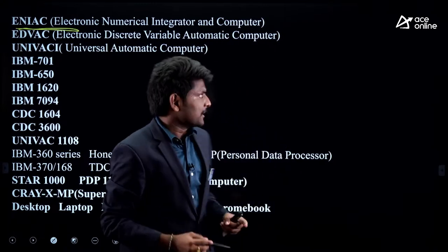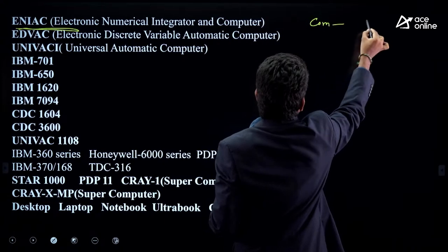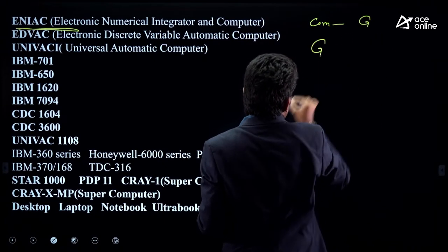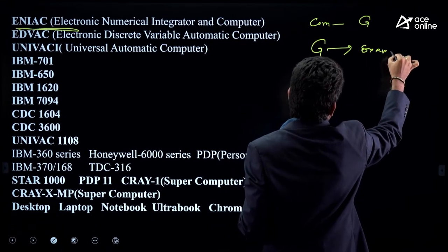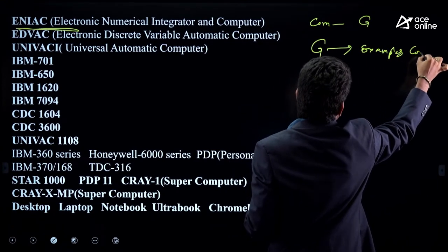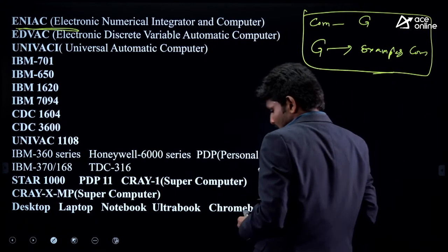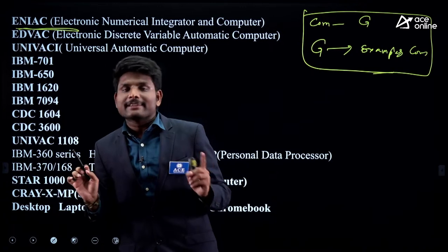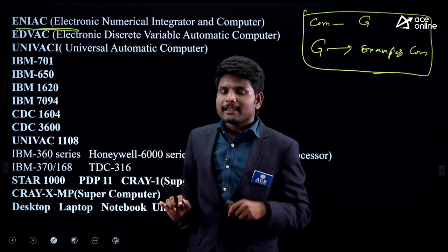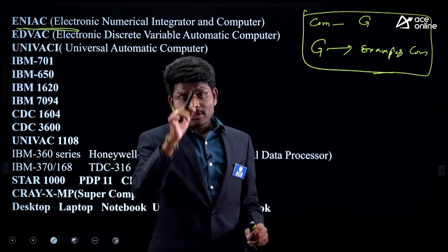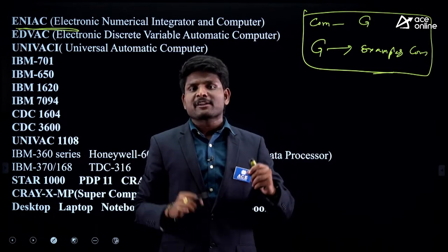There are two things: if they give you a computer name, you should be able to give its generation. If they give you a generation, you should be able to give example computers of that generation. If you do this practice, trust me, you can get one mark easily. They have already given this question twice or thrice.